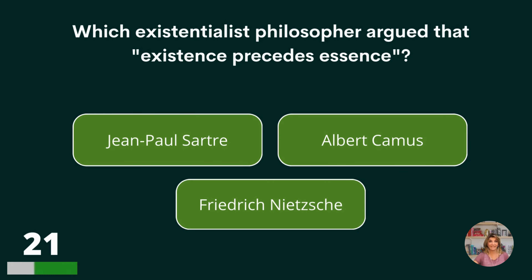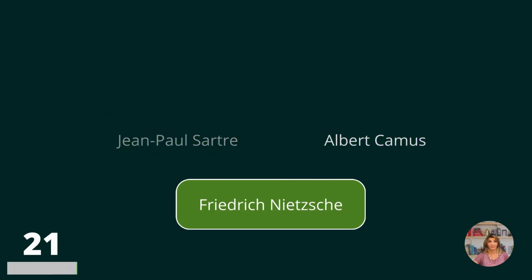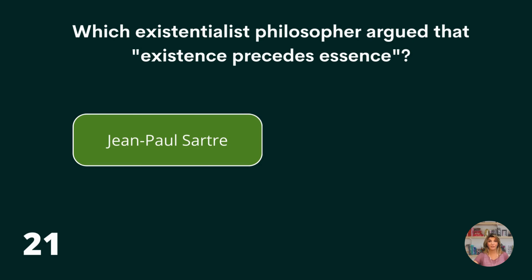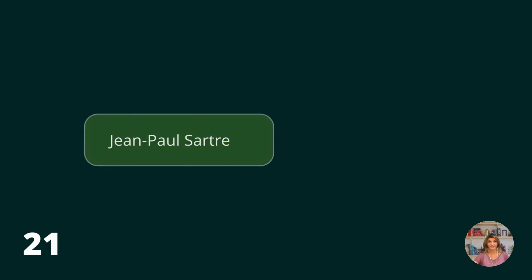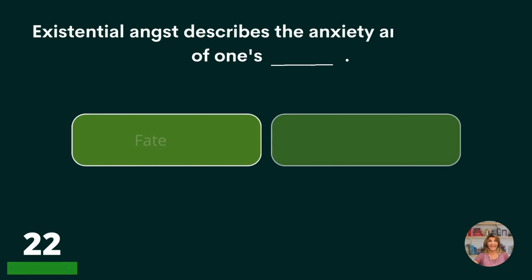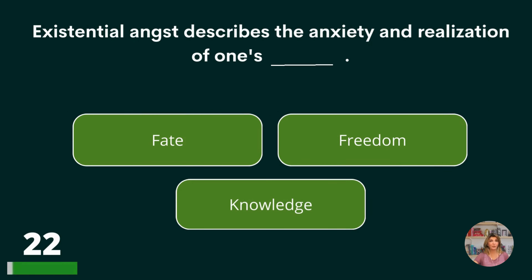Let's move over to philosophical theories. Which existentialist philosopher argued that existence precedes essence? Sartre, Albert Camus, or Friedrich Nietzsche? Jean-Paul Sartre.